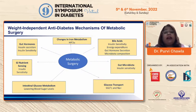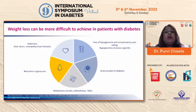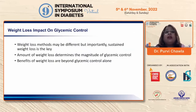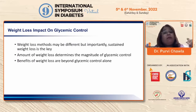Weight-independent anti-diabetes mechanisms of metabolic surgery are equally acknowledged, including benefits in gut microbiota, nutrient sensing, hormones, and glucose metabolism. However, weight loss is very difficult to achieve in those with diabetes — not only due to sedentary lifestyle, but also fear of hypoglycemia driving overeating, the burden of diabetes itself, medications, and even reduction in glucosuria.